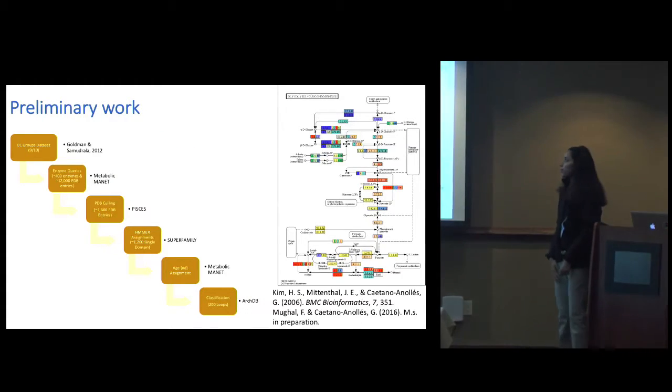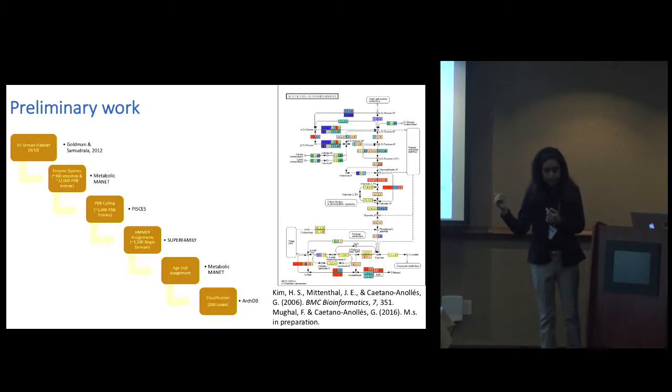The preliminary work we've done in this regard is we took that 10 EC group data set and ran enzyme queries for the corresponding enzymes at the fourth classification level using the metabolic MANET—the metabolic molecular ancestry network. This is a product of our lab created in 2006, and I updated this to the fold family level during my master's thesis. We switched from fold to fold family level because fold families have a stronger evolutionary connection compared to folds. We came up with 12,000 PDB entries corresponding to these 400 enzymes. To use high resolution structures, we used the PISCES server for culling them to 1,600 PDB entries.